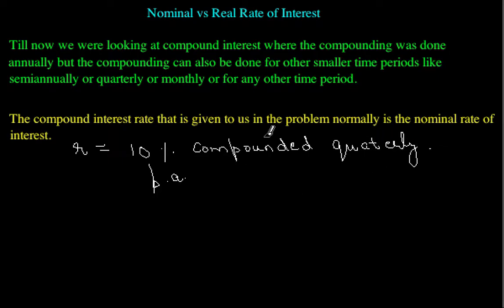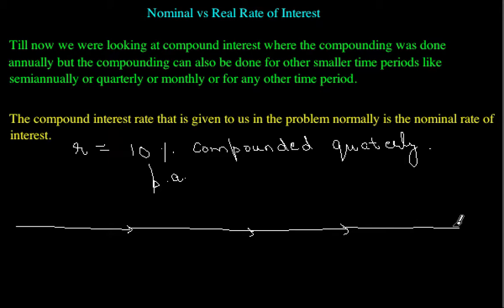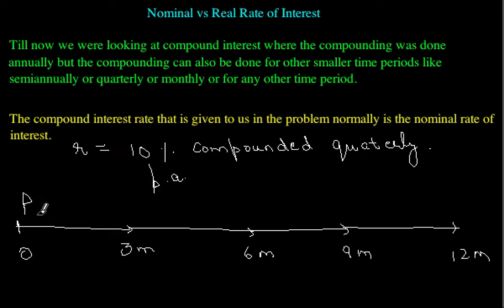So what does this exactly mean? We draw a timeline: this is the time period, and suppose this is 3 months, 6 months, 9 months, and 12 months. At time point 0 we borrow a principal amount P. We are given 10% compounded quarterly, so when we go from 0 to 3 months we cover one quarter, and there must be some compound interest done from 0 to 3 months because compounding is being done quarterly.